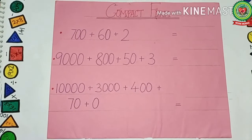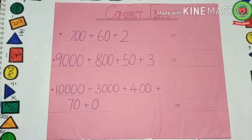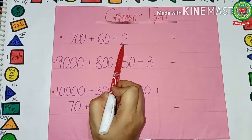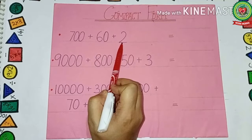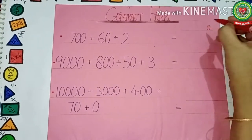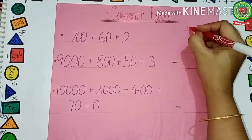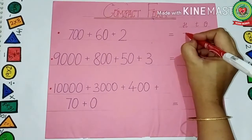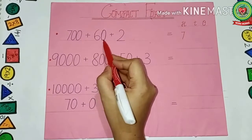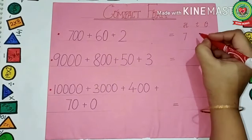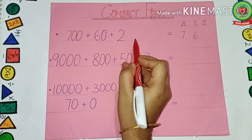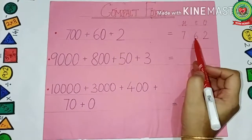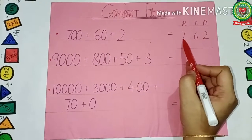Let us take some examples now. See the first statement: seven hundred plus sixty plus two. The first step is to write the place value table — ones, tens, and hundreds. Seven with two zeros means seven hundred, so seven goes under hundreds. Six with one zero means sixty, so six goes under tens. Two with no zeros goes under ones. So the short form of this expanded form is seven hundred sixty-two.